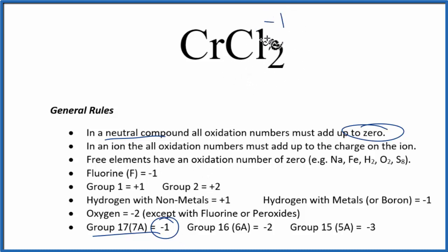So we can use this information and the fact that they all add up to zero in a neutral compound to find the oxidation number for the Cr. So let's just call this X and set up a little equation. X plus, we have two chlorine atoms, and each one is minus 1. That should equal the zero here. So X minus 2 equals 0. X equals 2.